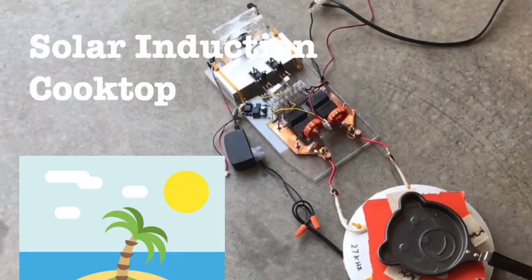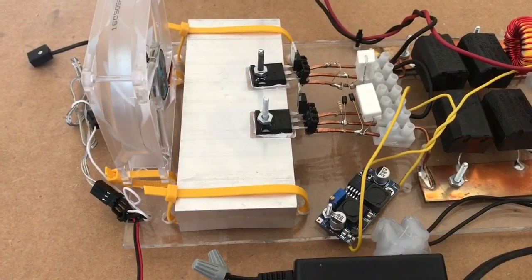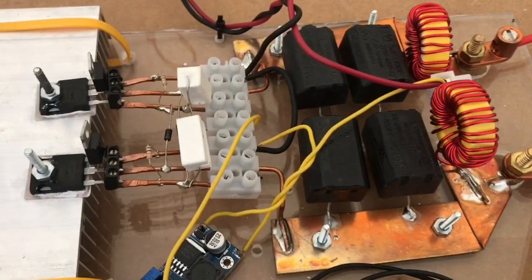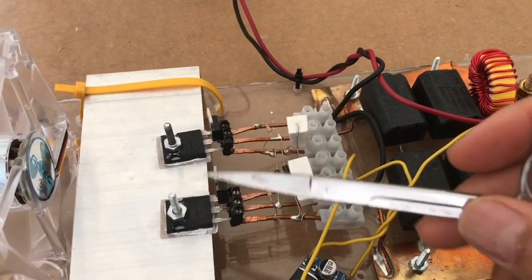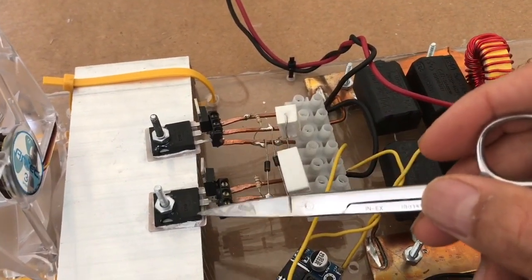In this video we're going to talk about a solar-powered cooktop. The circuit is based on a Mazzilli driver which I made from IRFB260 transistors that are heatsinked.